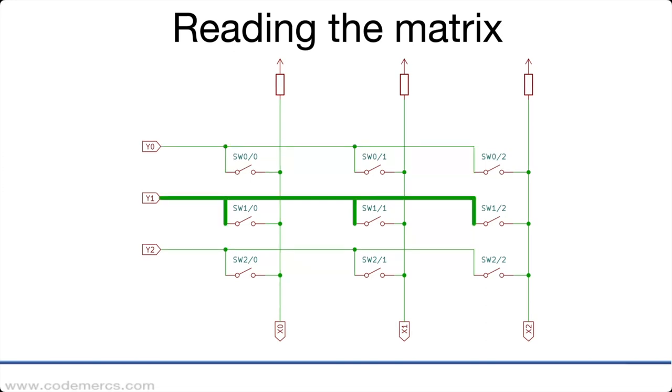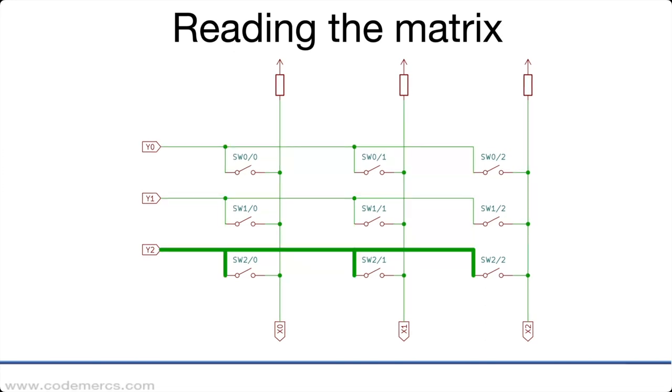Same for the y one line and the y two line. So the controller knows currently there's no key pressed.